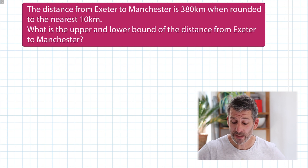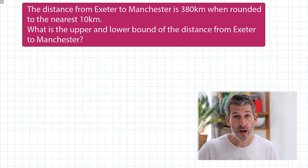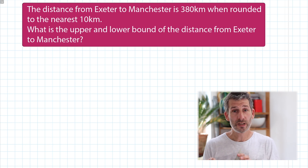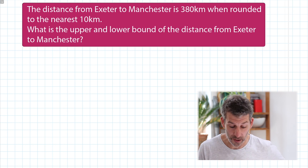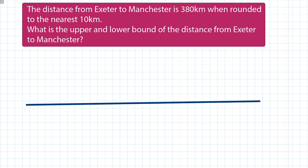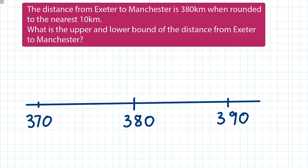In this question we're told that the distance from Exeter to Manchester is 380 kilometers when rounded to the nearest 10 kilometers, and we've been asked to find the upper and lower bound. I'm going to use a number line going up in tens with 380 in the middle. So I start at 370 and go up to 390. The lower bound is going to be the point exactly halfway between 370 and 380.